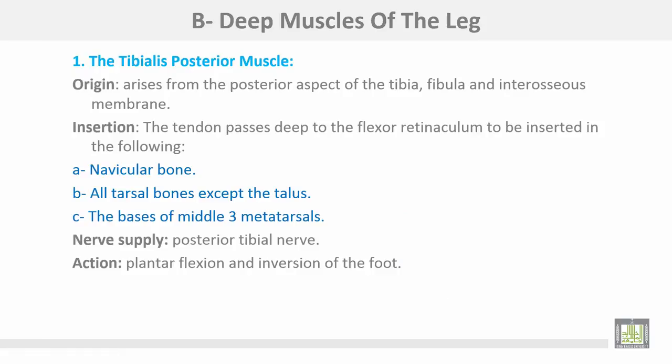Tibialis posterior muscle arises from the posterior aspect of the tibia, fibula, and the interosseous membrane. Insertion: the tendon passes deep to the flexor retinaculum to be inserted into: number one, the navicular bone; number two, all tarsal bones except the talus; number three, the bases of the middle three metatarsals. Nerve supply is from the posterior tibial nerve. Action: plantar flexion and inversion of the foot.